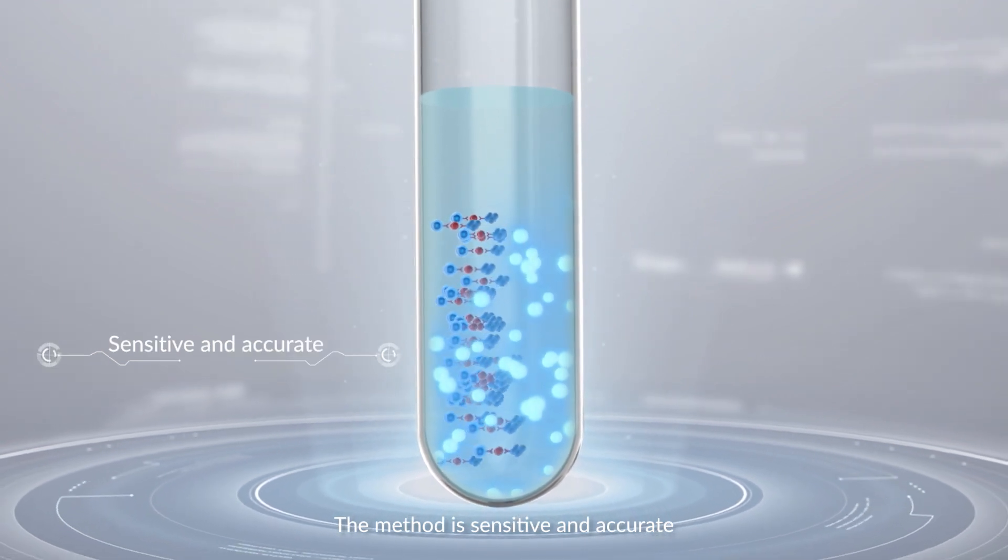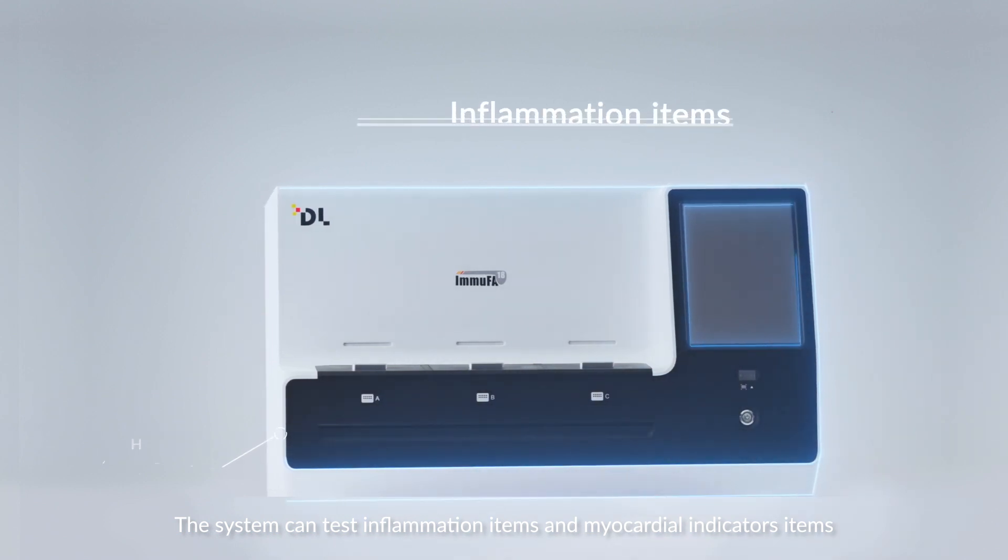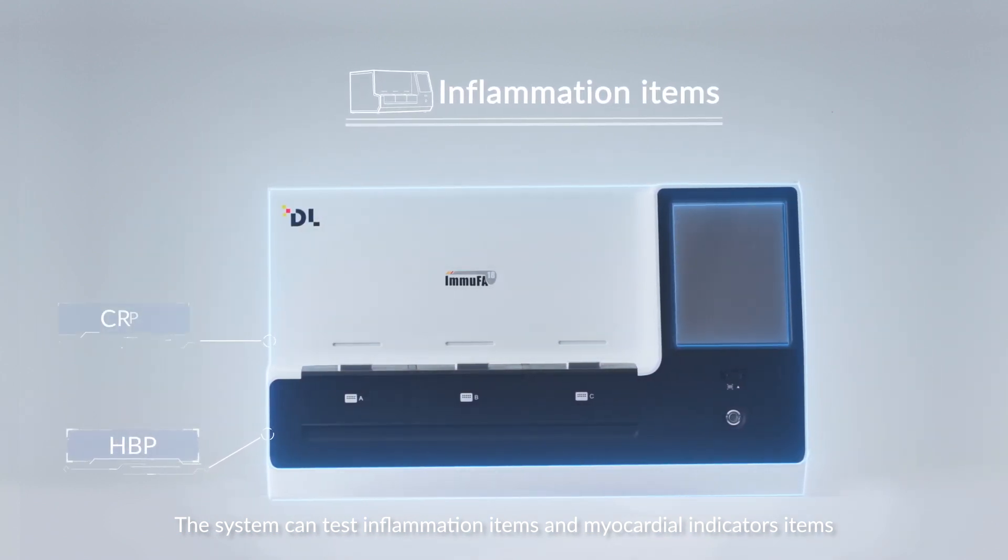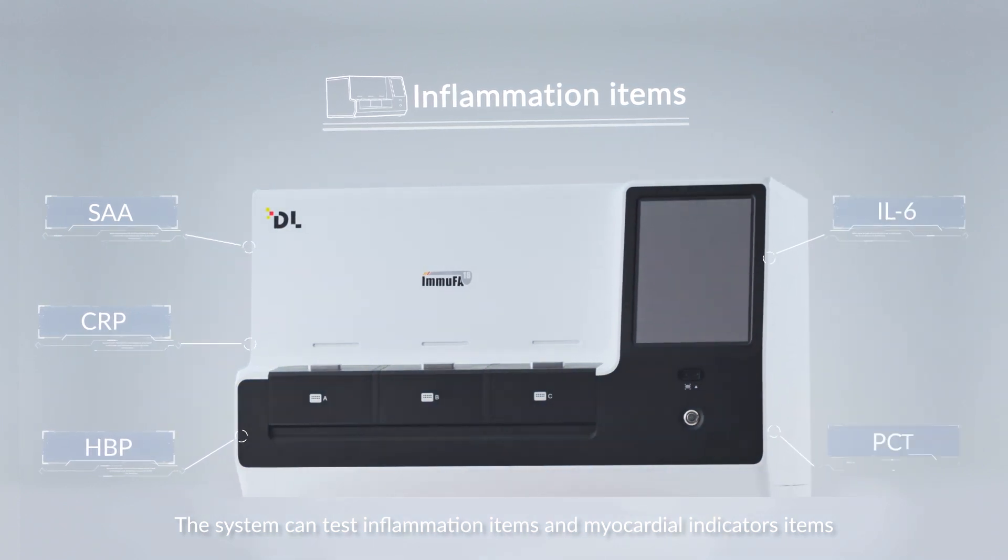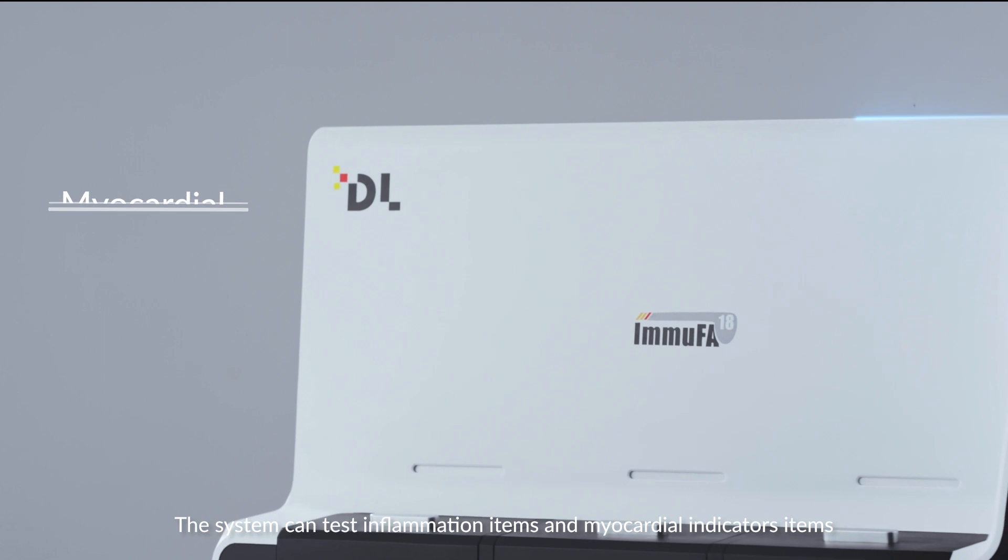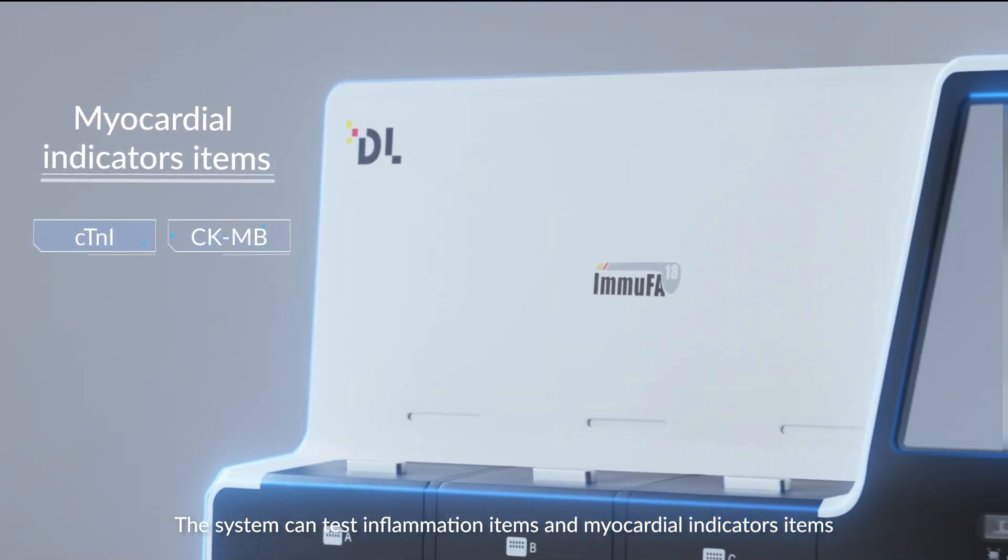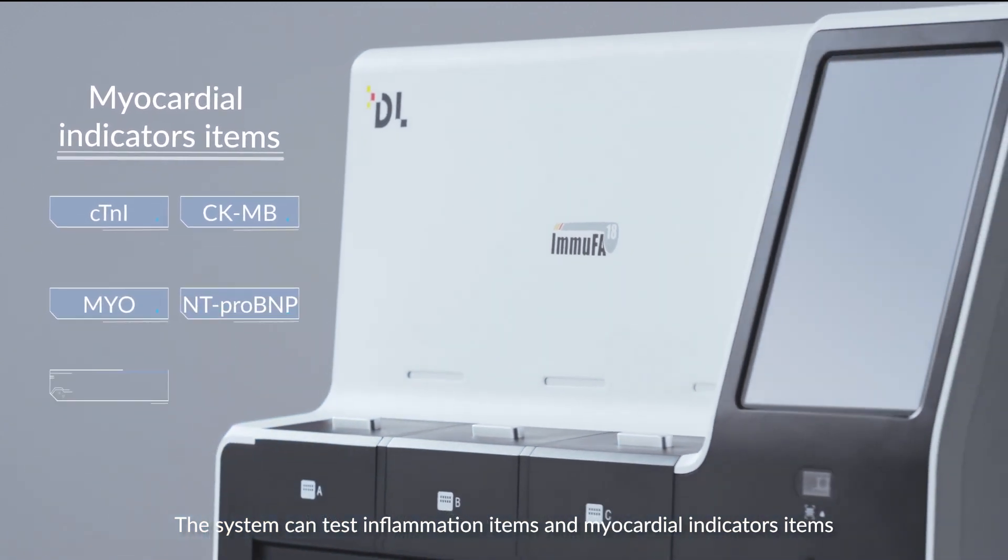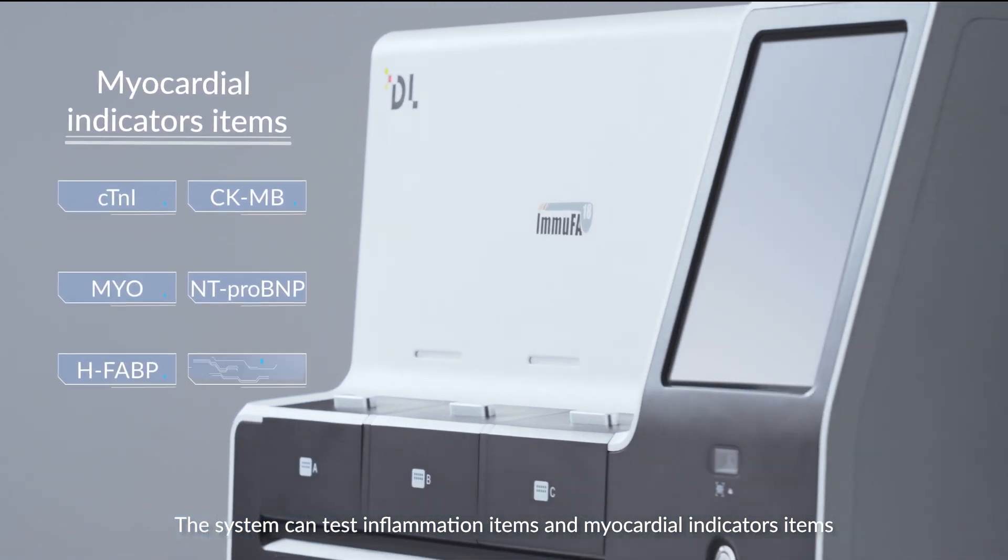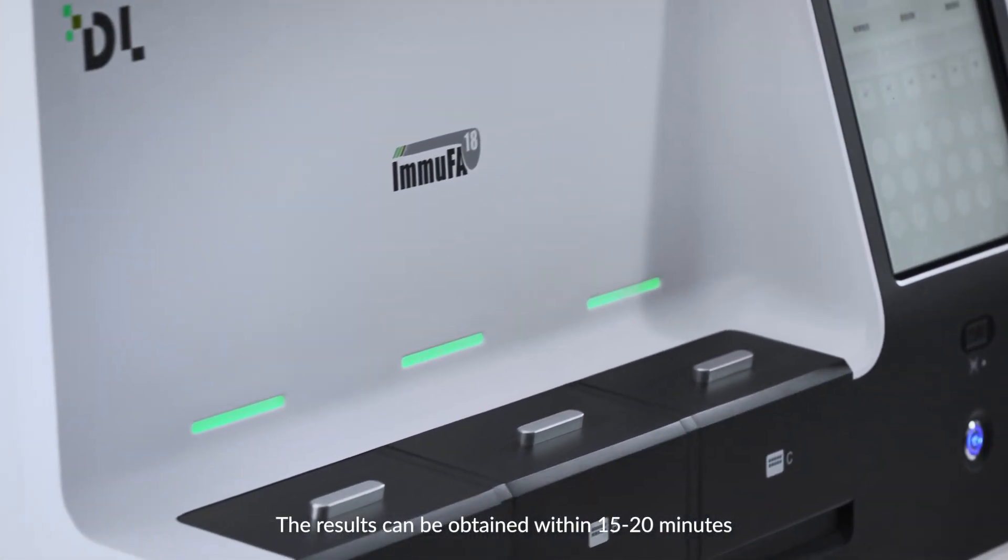The method is sensitive and accurate. The system can test inflammation items like HPP, CRP, SAA, IL-6, PCT, etc., and myocardial indicators including CTNL, CKMB, MYO, ANTIPRO BMP, HFABP, and D-dimer. The results can be obtained within 15 to 20 minutes.